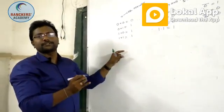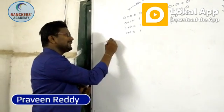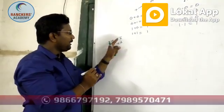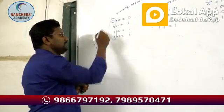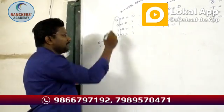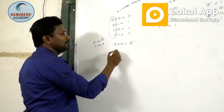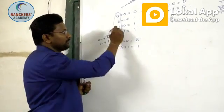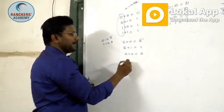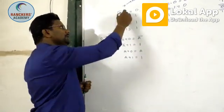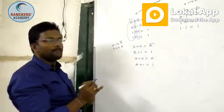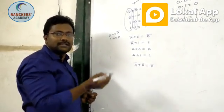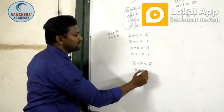So zero complement gives us the basis for formulas. A bar plus zero is equal to A bar. A bar plus one is equal to one — anything plus one means one. A plus zero is equal to A. A plus one is equal to one. A bar plus A bar is equal to A bar.